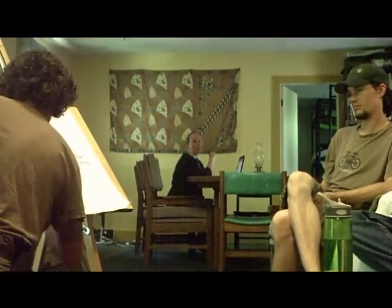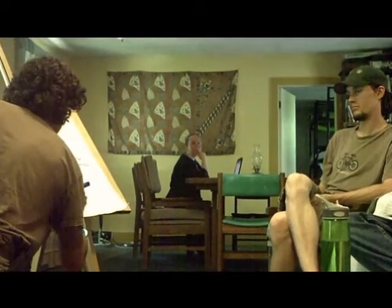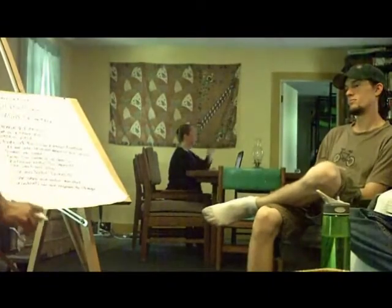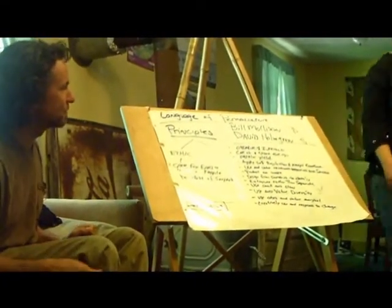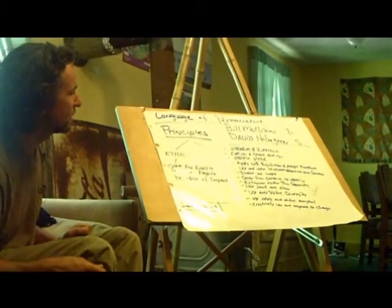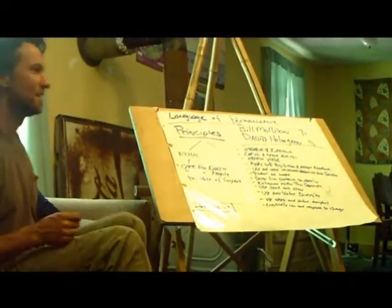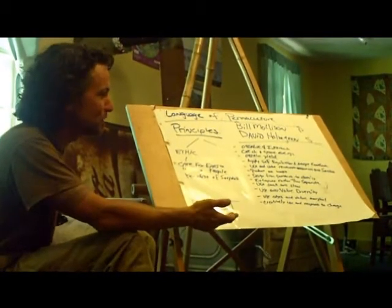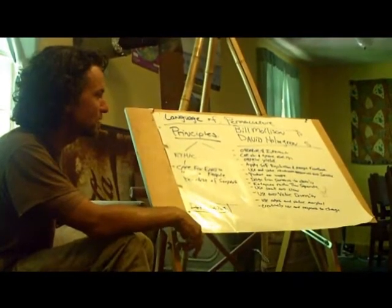Creatively use and respond to change. So these 12 principles keep with Bill Mollison's statements that permaculture is about positivity and cooperation. You can tell that every one of these is positive. Creatively use and respond to change — that's not the easiest thing to do, but it's real positive.